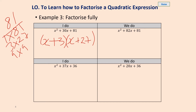Have a go at what we put into the brackets to factorise this quadratic expression. Pause the video while you have a go. You should have x plus 81 and x plus 1. When we multiply that back out and expand it, and collect the terms, we will have x squared plus 82x plus 81.